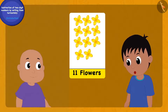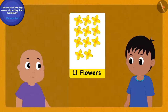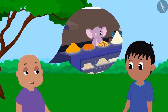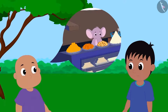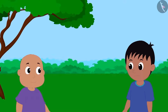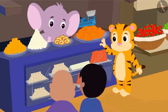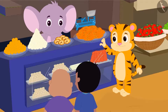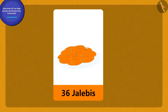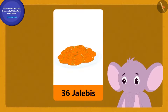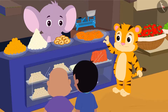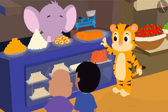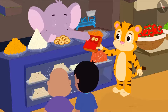Raju still could not understand clearly and said: can you explain that to me with another example? So Bablu said: let's go to Appu's sweet shop, I will give you another example there. When Raju and Bablu went to Appu's sweet shop, they saw that Appu had 36 jalebis.